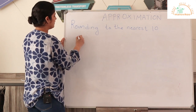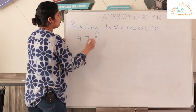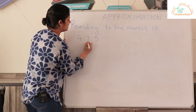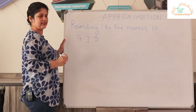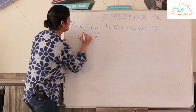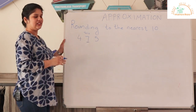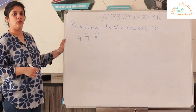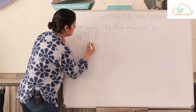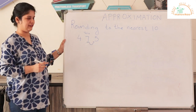Consider an example: 475. When we talk about rounding to the nearest 10, we focus on the digit in the tens place. In this number 475, the digit in the tens place is 7. The tens digit will either change or remain the same depending on the number following it. The number following 7 is 5.